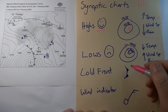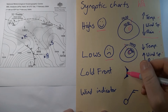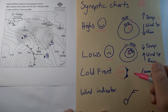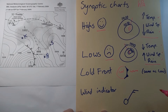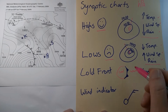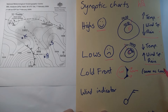The next symbol is a line with triangles pointing off it — this is called a cold front. It's the front of a cold air mass; behind it is a mass of cool air and in front is a mass of warm air. Air of different temperatures doesn't mix well. The cold front moves in the direction the arrows on it are pointing, and it brings the same lousy conditions as a low: lower temperatures, increased wind speed, and increased chance of rain.